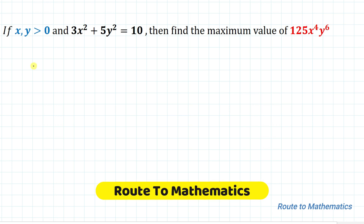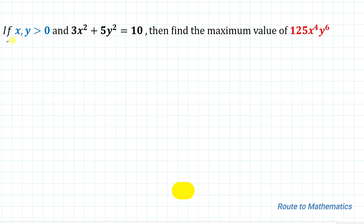Hello everyone, welcome to Root 2 Mathematics. In this video, we are going to solve this question: if x, y are greater than 0 and 3x² + 5y² = 10, then find the maximum value of 125x⁴y⁶.